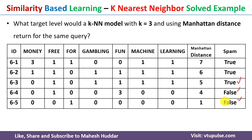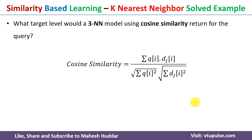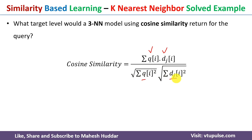Now coming to the last metric — cosine similarity. The cosine similarity formula is: the summation of the dot product between the query example and the given examples, divided by the square root of the summation of qi squared, multiplied by the square root of the summation of dj squared, where q is the query example and d is the given example.